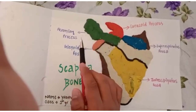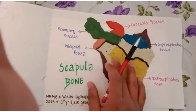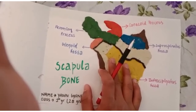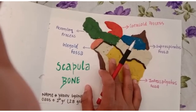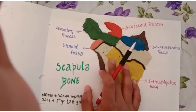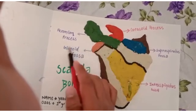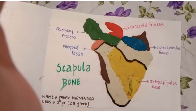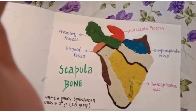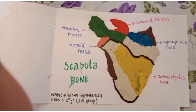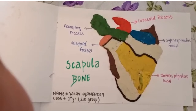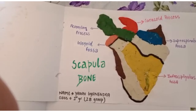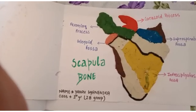The acromion process gives insertion to the trapezius muscle, which is innervated by the accessory nerve and is responsible for shoulder function. The supraglenoid tubercle gives attachment to the tendon of biceps brachii, while the infraglenoid tubercle gives attachment to the triceps. Secondary ossification of the scapula occurs at 20 years of age.